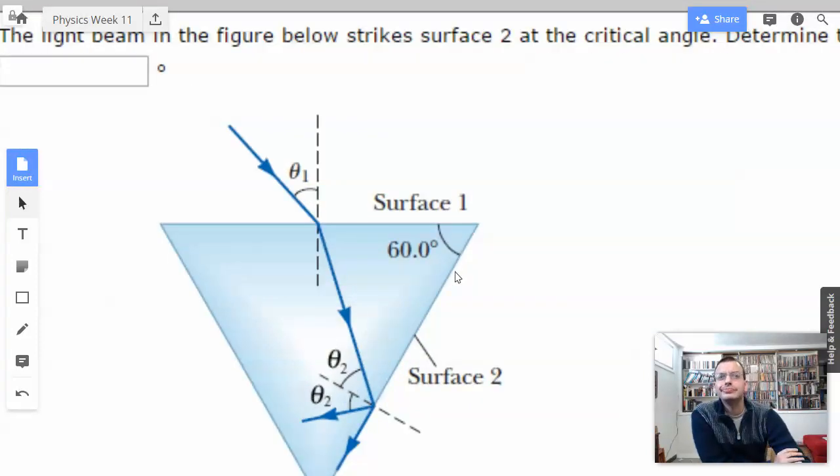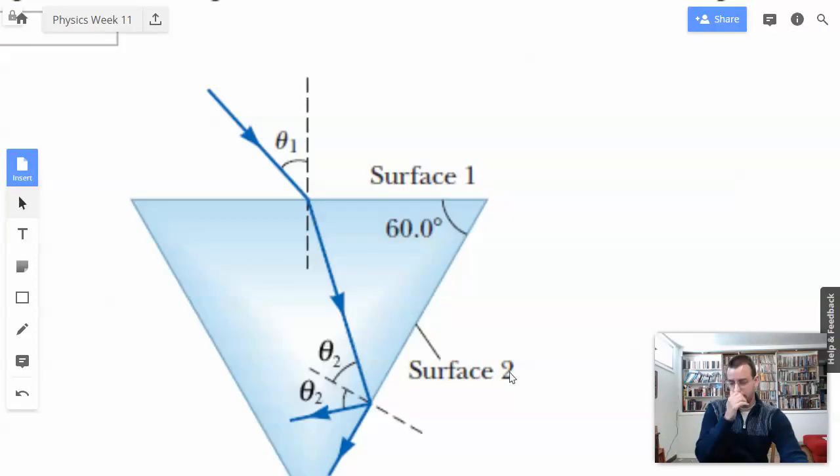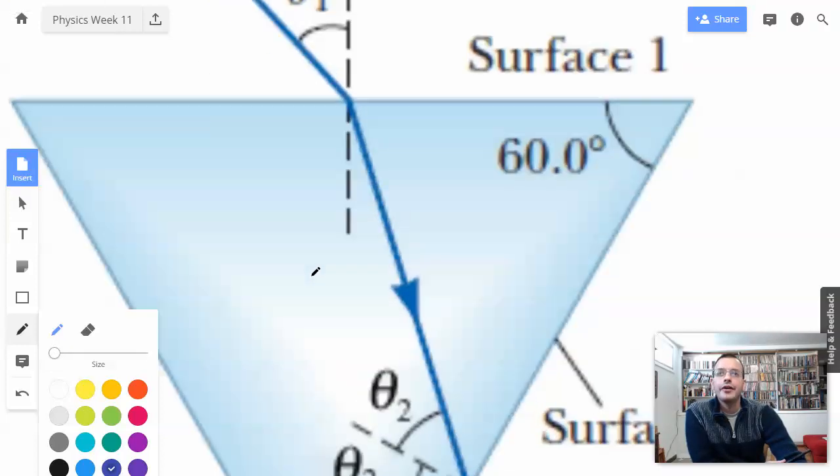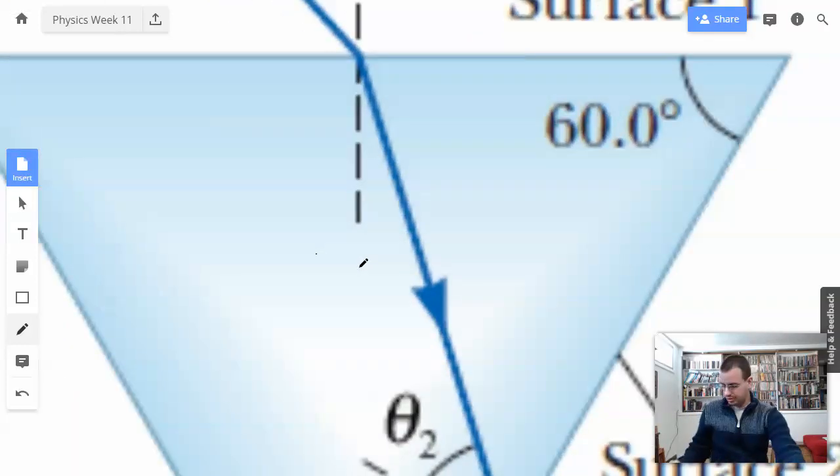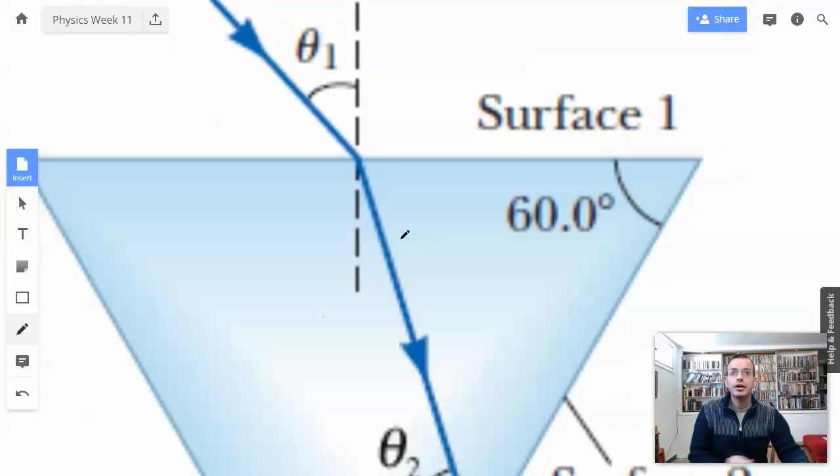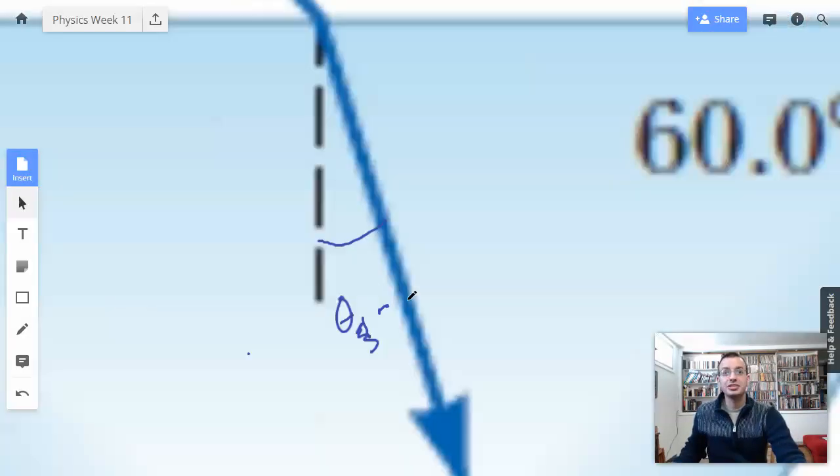Alright, so draw out some angles real quick, and I'll make my pen super small so I can actually draw on here. We're going to have this angle right here. I'll call this theta 3, just because I need... I'll just leave it as theta right now, so I can be non-committal about the whole thing.